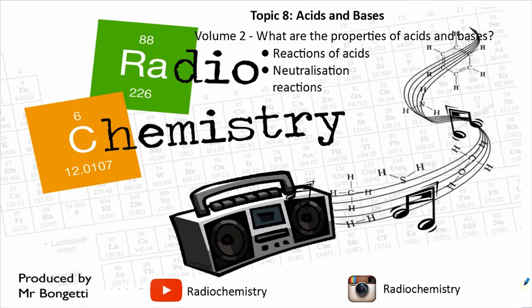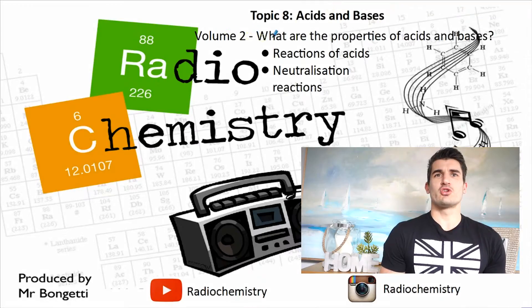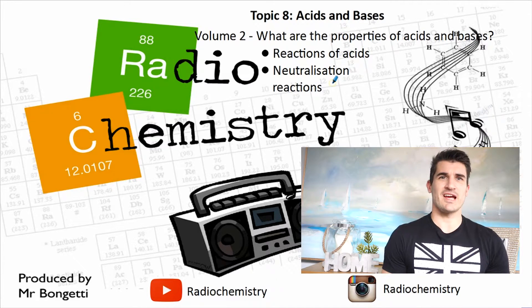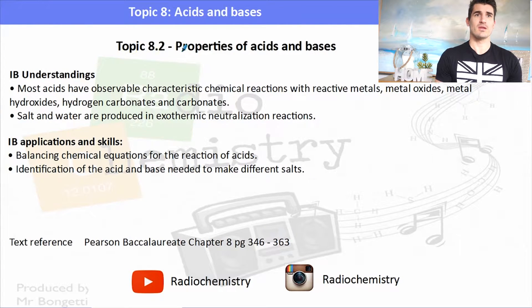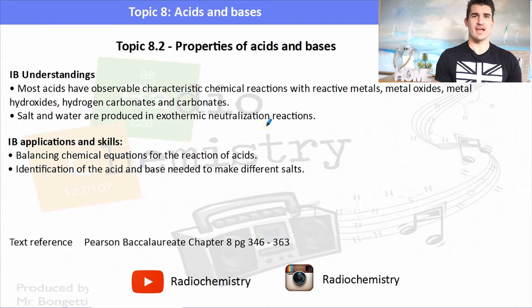Welcome to another video. We're still on topic 8, acids and bases — this is volume 2, where we look at the properties of acids and bases. We do a heap of different reactions and discuss what a neutralization reaction is. The IB understandings require us to understand the different types of reactions of acids with different types of metals and metal oxides and write equations for them.